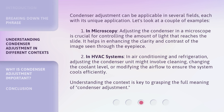Condenser adjustment can be applicable in several fields, each with its unique application. Let's look at a couple of examples. One: in microscopy, adjusting the condenser in a microscope is crucial for controlling the amount of light that reaches the slide. It helps in enhancing the clarity and contrast of the image seen through the eyepiece.